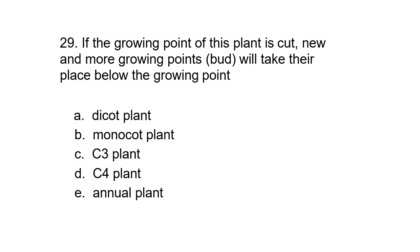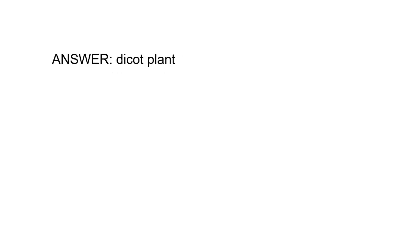Number 29: If the growing point of this plant is cut, new and more growing points will take their place below the growing point — a) dicot plant, b) monocot plant, c) C3 plant, d) C4 plant, or e) annual plant. The correct answer is dicot plant.